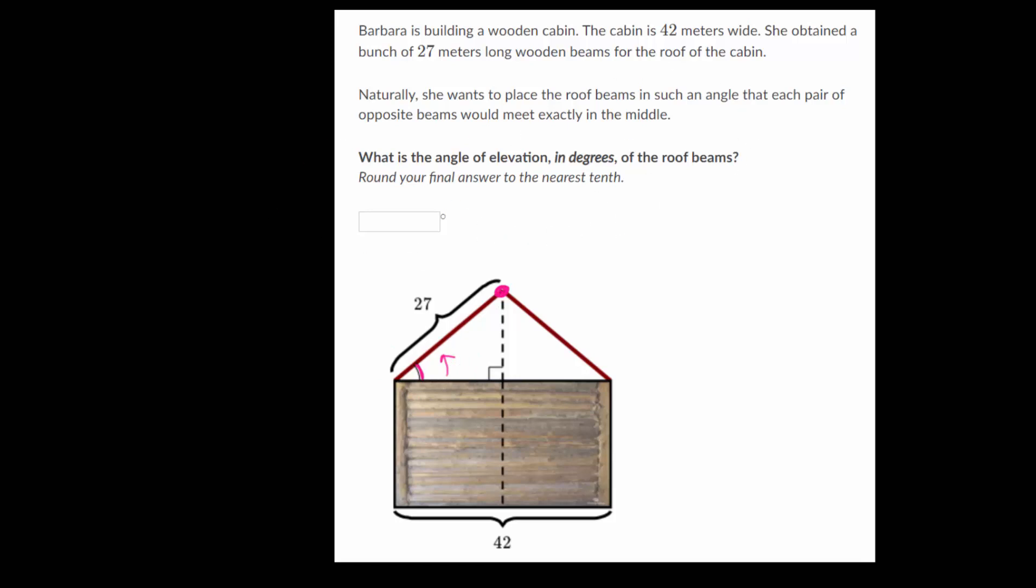And we want to round to the nearest tenth. So this one's a little bit tricky since we don't have our triangle explicitly set up for us. But we were told that we want the beams to meet right in the middle. And we know that this length here across the entire house, that's 42.